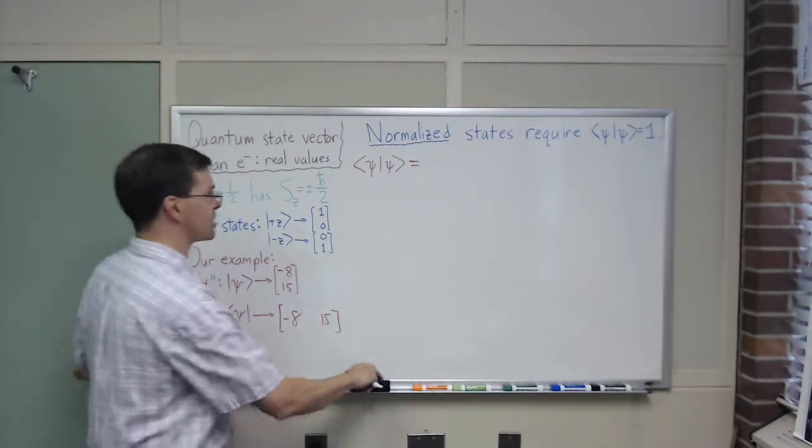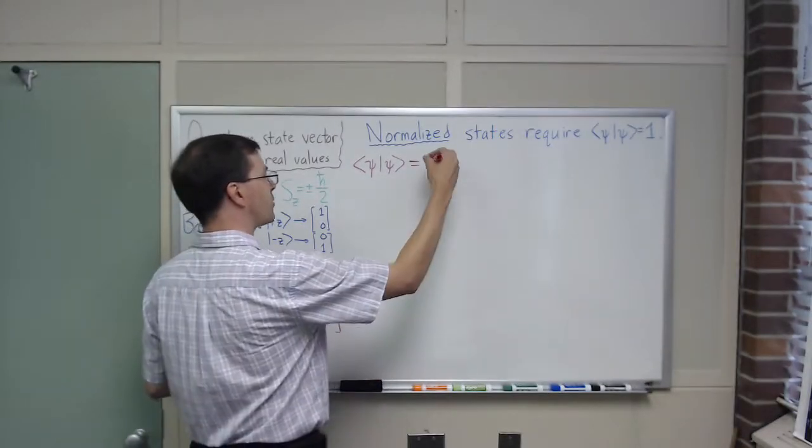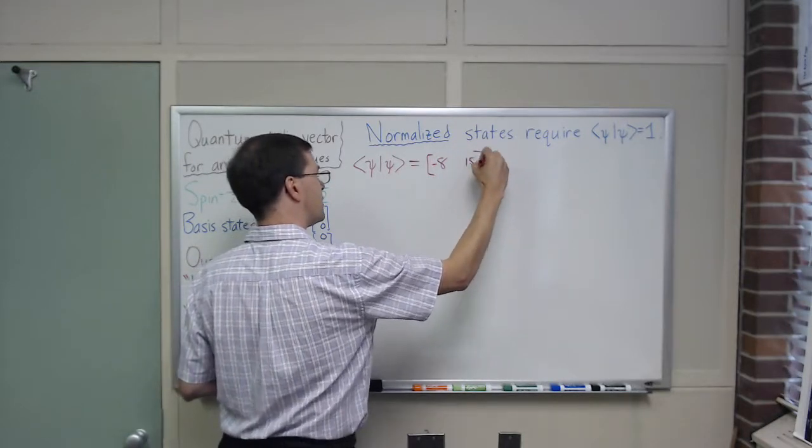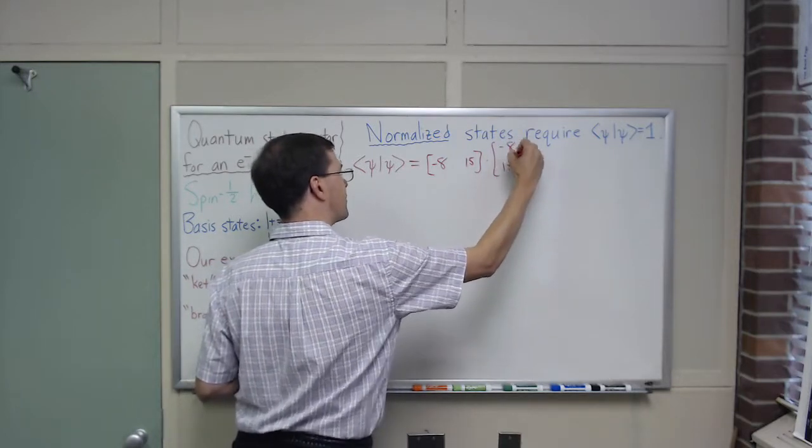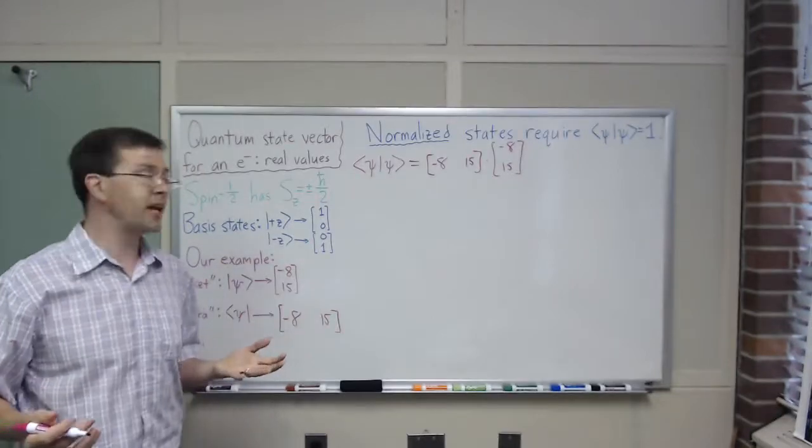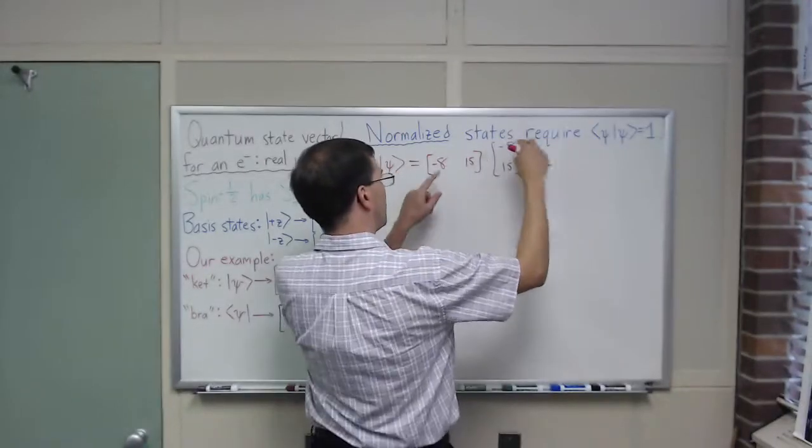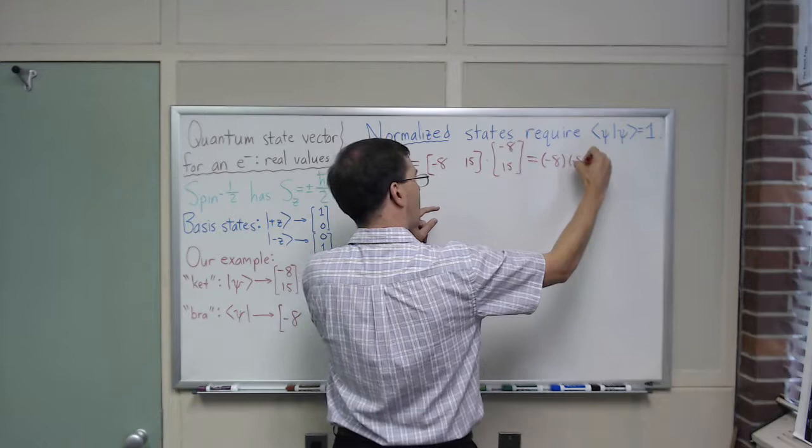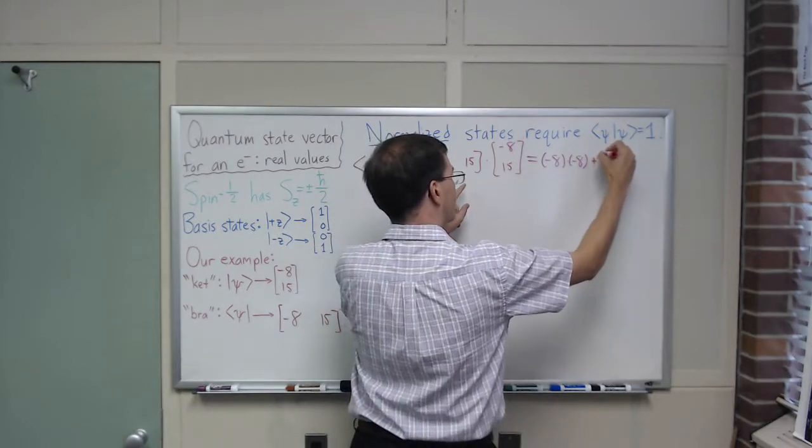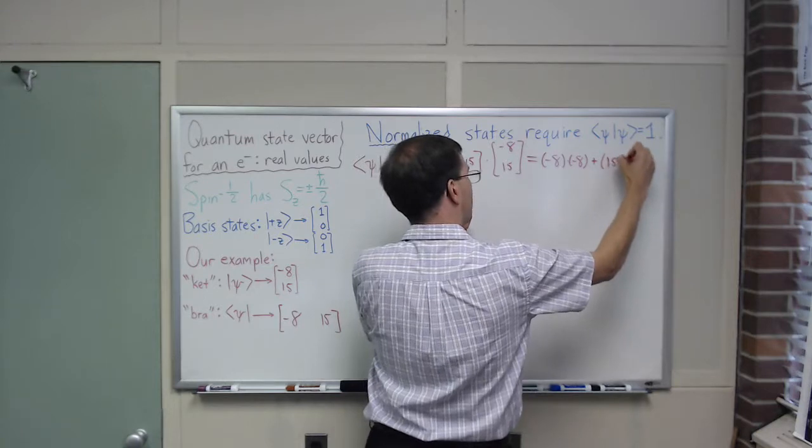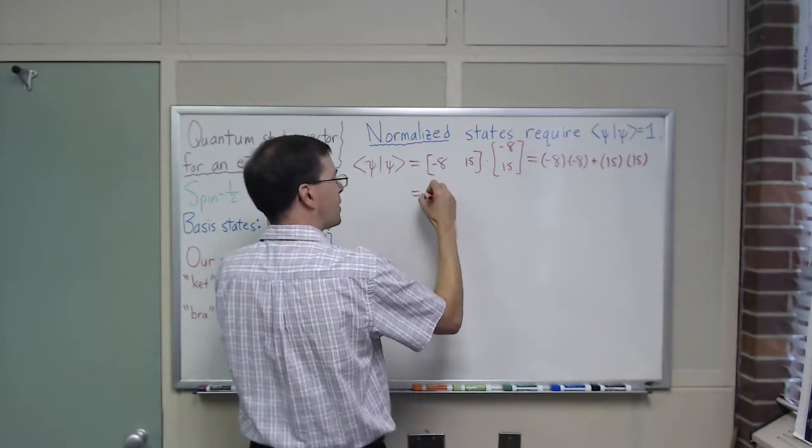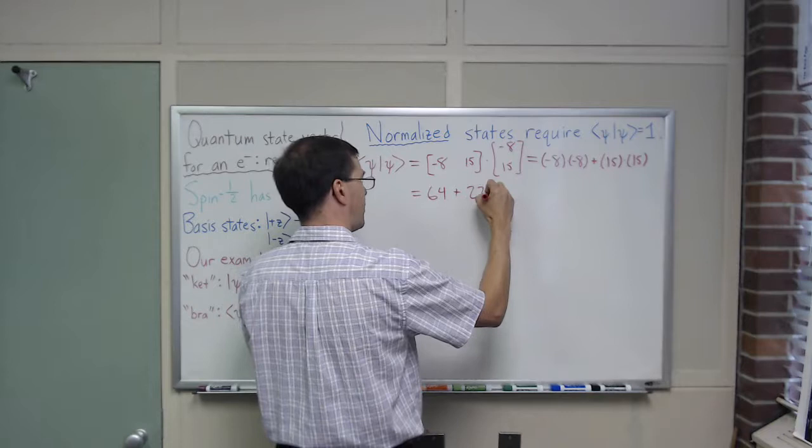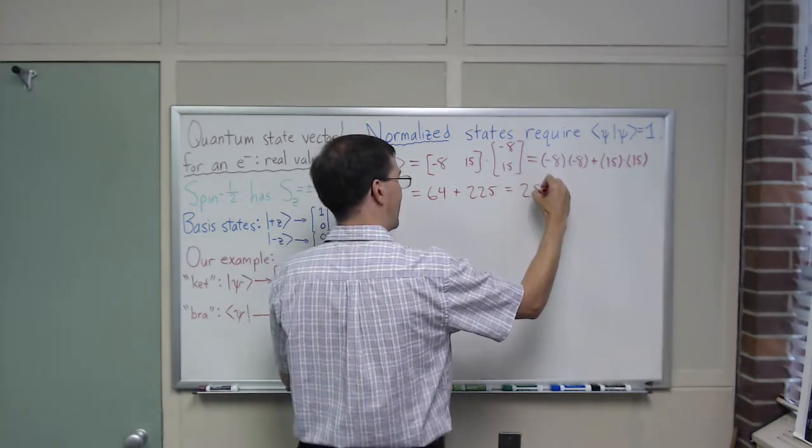This is ψ bra with ψ ket. I'm going to represent this as our row matrix (-8, 15) multiplied by the column matrix (-8, 15). If you know matrix multiplication, you know that what we do here is to multiply the first component here with the first component there, -8 squared, and then we add to that the second component times the second. If we work that out, the first term gives me 64, the second gives me 225, and that is 289.